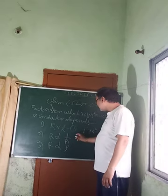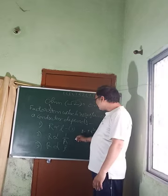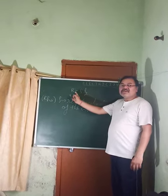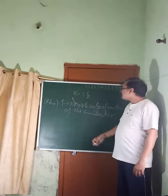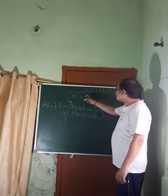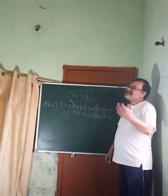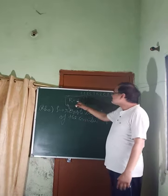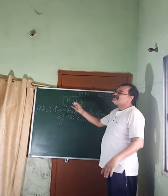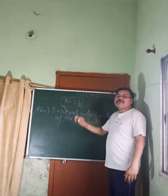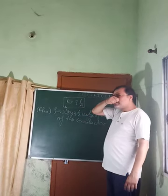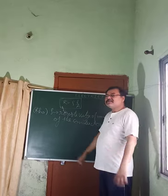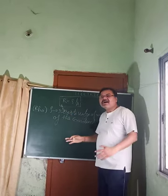Combining all three factors, we get the expression: R equals rho times L divided by A. So resistance depends directly on length L, inversely on area of cross section A, and directly on the resistivity rho of the material. As thickness of the wire increases, resistance decreases; as thickness decreases, resistance increases. Good conductors have low resistivity and therefore low resistance.